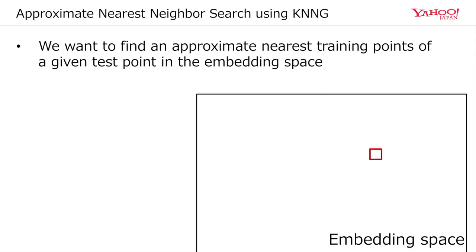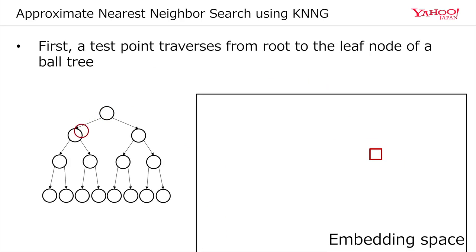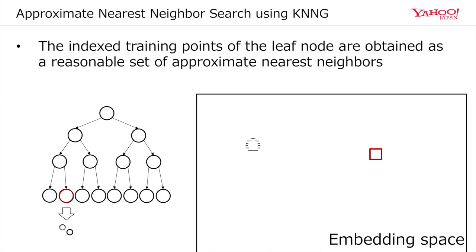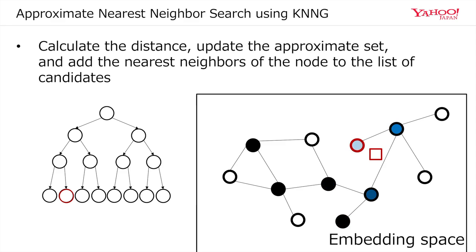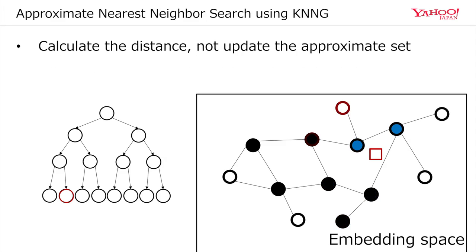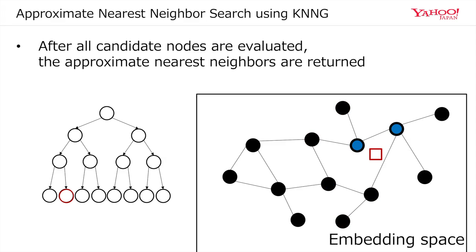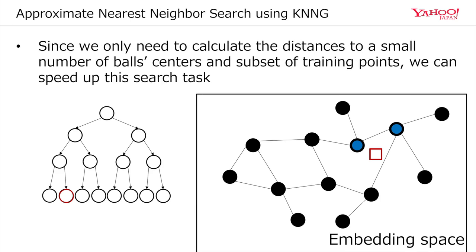We want to efficiently find nearest training points in the embedding space. First, a test point traverses a ball tree. Then the indexed points are obtained as a reasonable set of approximate nearest neighbors. The nearest neighbors of those nodes are added to a list of candidates. We further improve the approximation quality by local search. After all candidate nodes are evaluated, the approximate nearest neighbors are returned. Using these procedures, we can speed up the search.